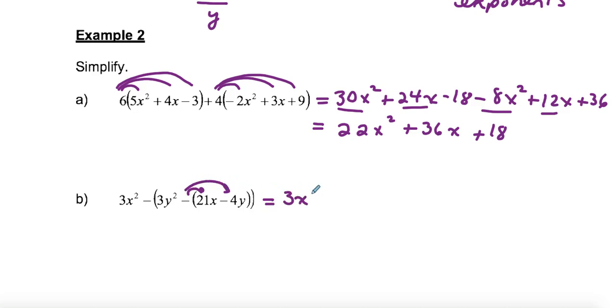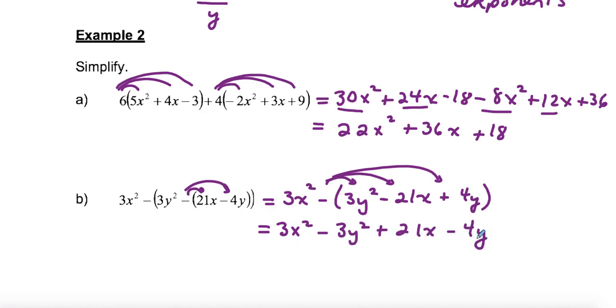So I would probably just do this one step at a time. I would probably write this out as negative 21x plus 4y as my first step and multiply by the negative 1 first. Then I see that I've got 3x squared. And now I'm going to have to multiply all of these terms by negative 1. So I have negative 3y squared and then plus 21x and then minus 4y. And then that's all you can do because none of those terms are alike.